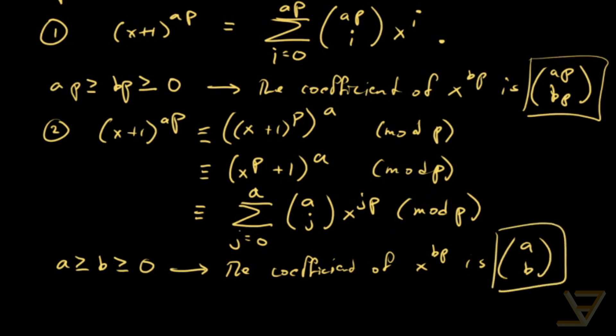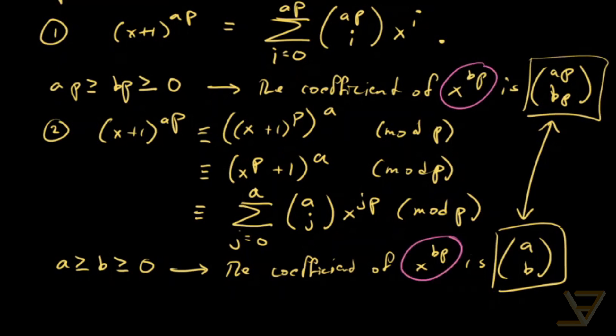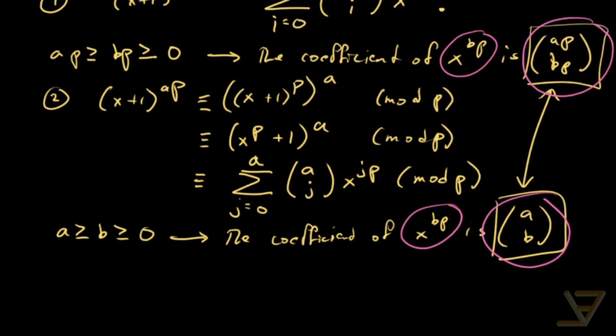So we just have to connect these two, both of which are coefficients of x to the b p. And we finally get that modulo p, we find that a p choose b p is congruent to a choose b mod p.